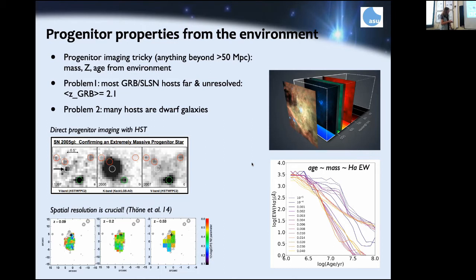One example GRB site is actually in a low-metallicity region — though it's a controversial GRB because it had a four-second duration, sitting right at the long/short dividing line. This also illustrates that at higher redshifts, using the same spectrograph, you scale down a lot in angular resolution, making it very difficult to say anything specific about the HII region the GRB is actually in.